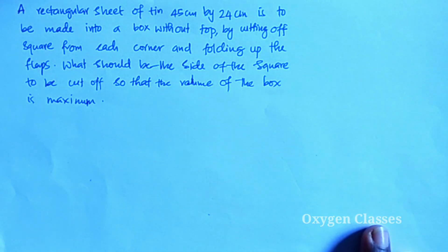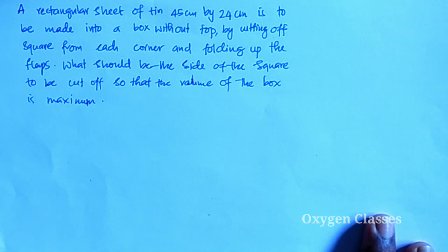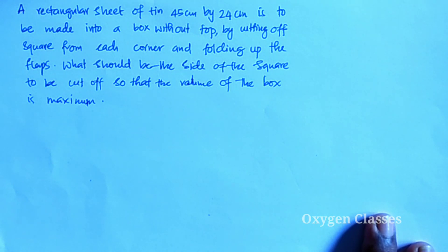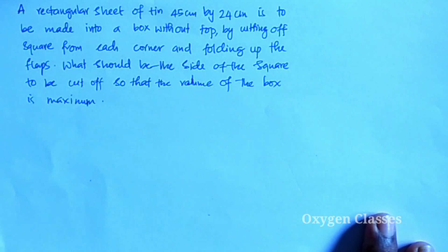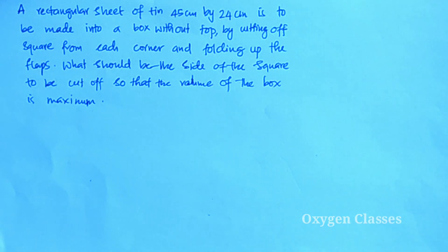Next question: a rectangular sheet of tin, 45 centimeters by 24 centimeters, is to be made into a box without a top by cutting off a square from each corner and folding up the flaps. What should be the side of the square to be cut off so that the volume of the box is maximum?